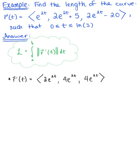Looking at this, we see that we have a scalar multiple of 2 times the natural exponential raised to the 2t, so we can rewrite this vector as 2 times the natural exponential raised to the 2t multiplied by the vector ⟨1, 2, 2⟩. Pulling that scalar multiple out like this is going to make finding the magnitude of this tangent vector a little bit easier, though you'll get the same answer either way.